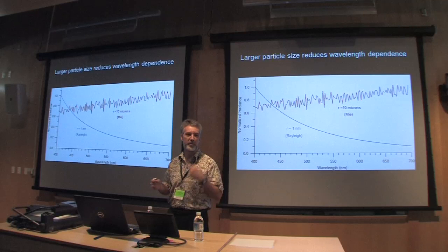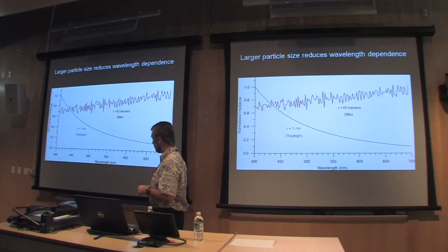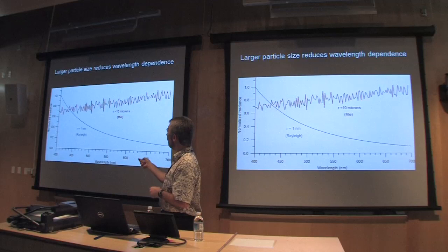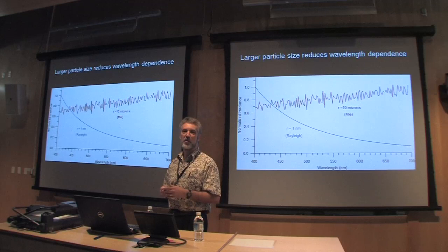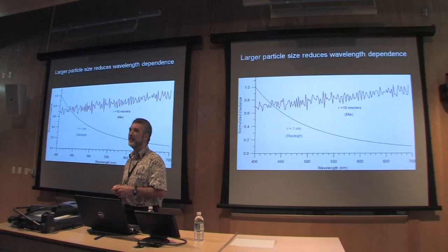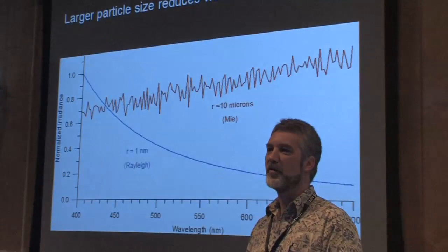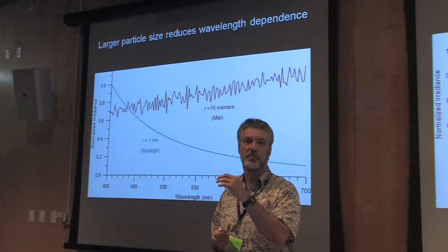At 400 nanometers — approximately the deep blue or violet region of the visible spectrum — we get a lot more scattering than out in the red, by a factor of about eight. The red curve is basically flat, and it's for a 10-micron water droplet, which is not in the Rayleigh scattering regime for visible light. That's in the Mie scattering domain, meaning it's comparable to or slightly larger than the wavelength of light, so we need a full electromagnetic solution. This would be typical of a cloud droplet.